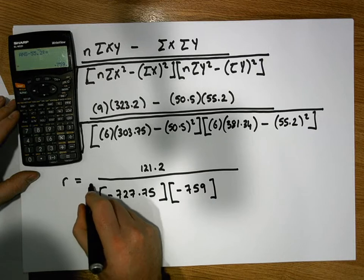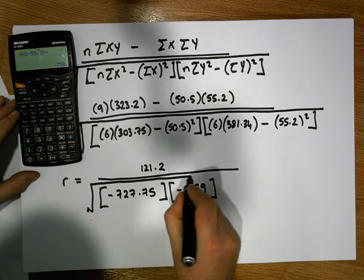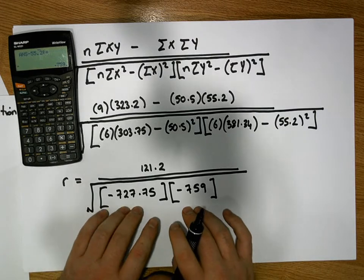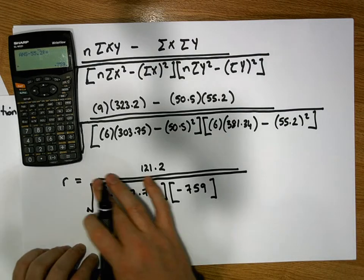It's important, because we're dealing with a square root, it's important that either both factors are positive or both factors are negative, because we can only ever get the square root of a positive number.